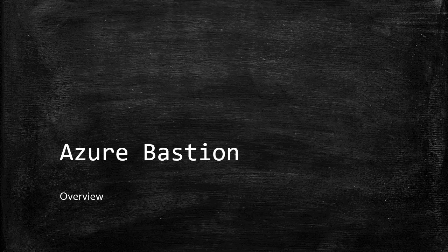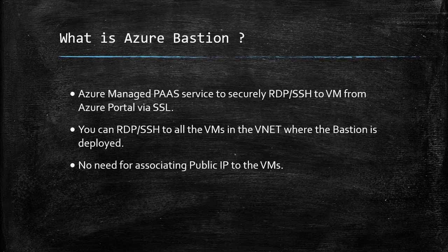Without any further ado, let's get started. What is Azure Bastion? Azure Bastion is an Azure-managed PaaS service to securely RDP or SSH to a VM from the portal via SSL. You can deploy Azure Bastion to a virtual network by defining a subnet called the Azure Bastion subnet, on which you deploy the Bastion service, and you will be able to RDP or SSH to all the VMs in the VNet.